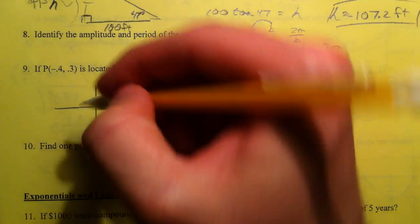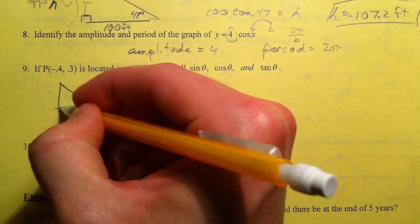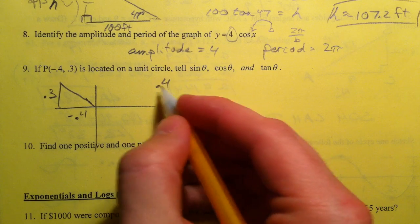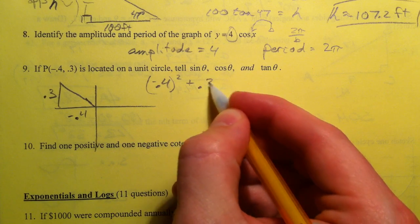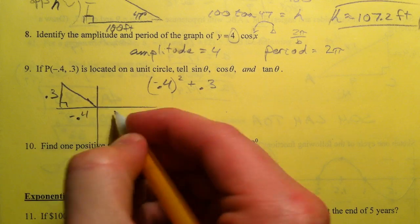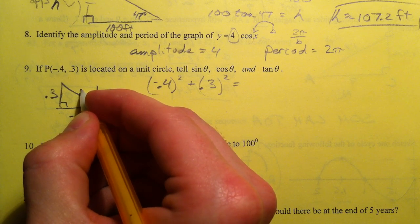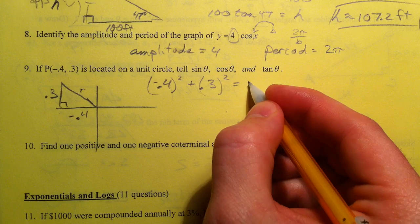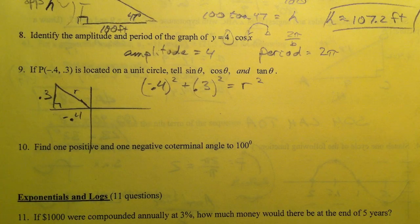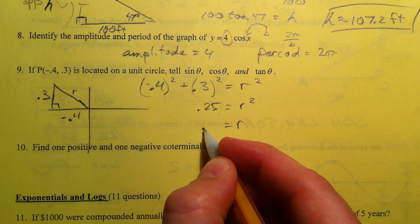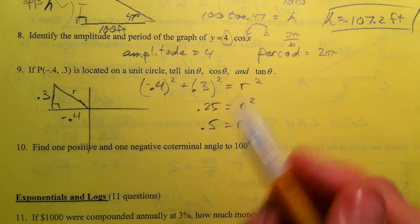But if you go negative point 4 and point 3, we get point 4 squared or negative point 4 squared if you want plus point 3 squared remember it's a right triangle that we always make with the x equals, if you want r squared or let's say r. So point 4 squared plus point 3 squared, and so that's 0.25, and so r is going to be 0.5. 3, 4, 5 triangle again.